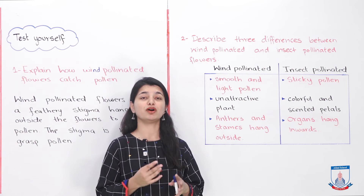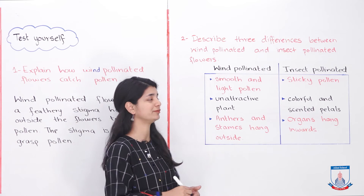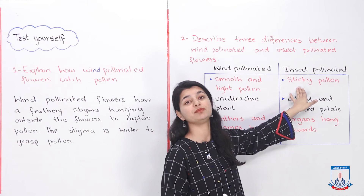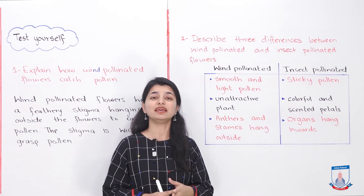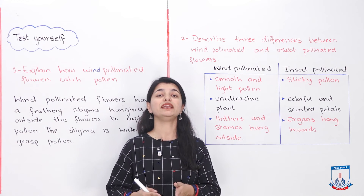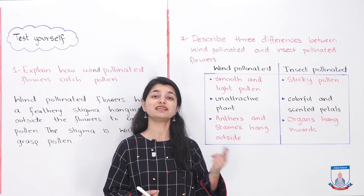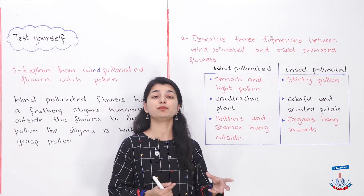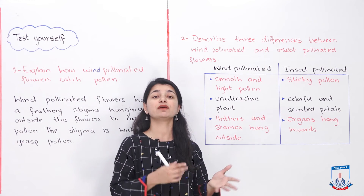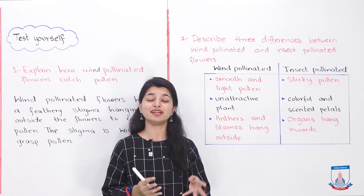The first difference: wind pollinated flowers or plants have smooth and light pollen, whereas insect pollinated plants have sticky pollen. The two types of pollen are different in appearance and characteristics. Wind pollinated pollen is very light and smooth, while insect pollinated pollen is very sticky. Insect pollinated pollen is not light or feathery because it needs to stick to the insect's body rather than float away in wind.